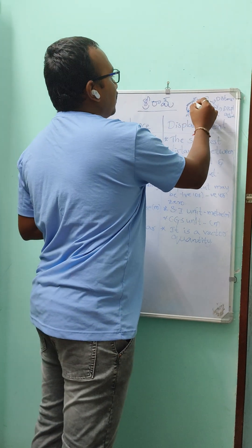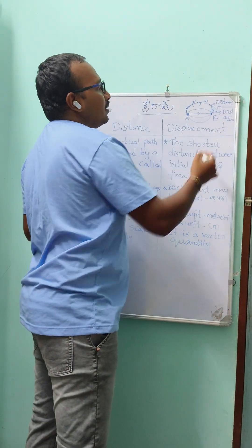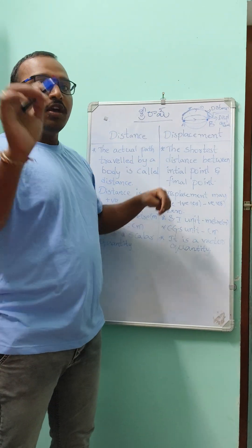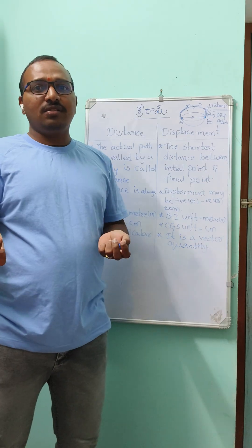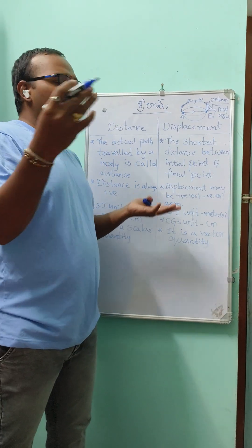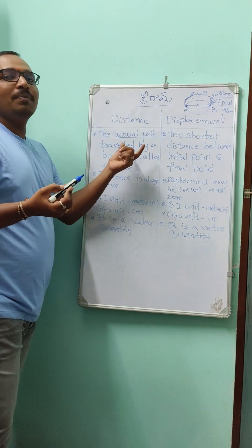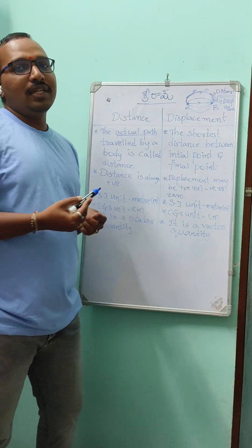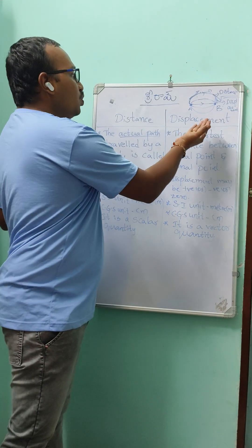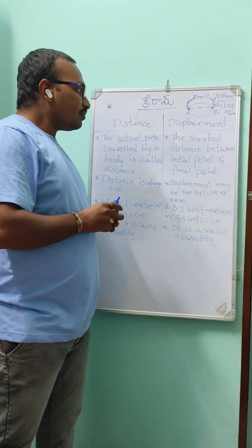Whichever path you choose, that actual path is called the distance. The actual path traveled by a body from one point to another point is called the distance.